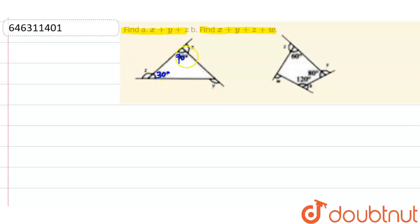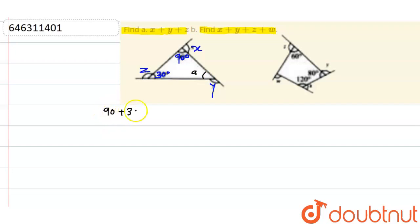This is 90 degrees we have. This is X we have. This is Z we have. And this is Y we have. Now, since it is a triangle, I can find this angle. Let's say this angle is A. The sum of all the angles of a triangle is 180 degrees.